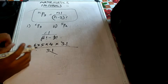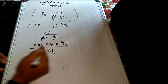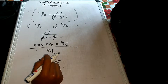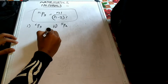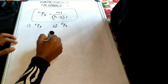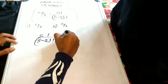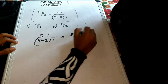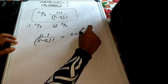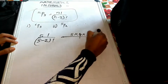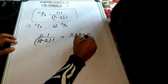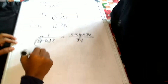So for 5P2: 5 factorial divided by 5 minus 2 factorial, that is 5 factorial by 3 factorial. So 5 into 4 into 3 factorial divided by 3 factorial, giving 5 into 4 which equals 20.